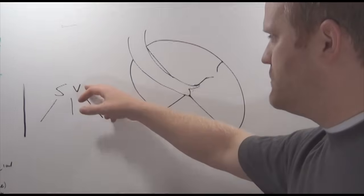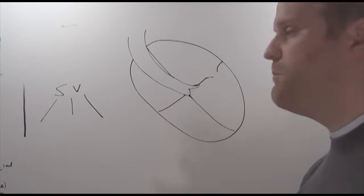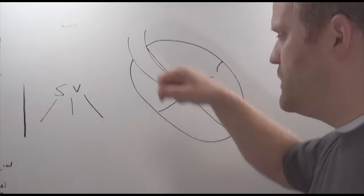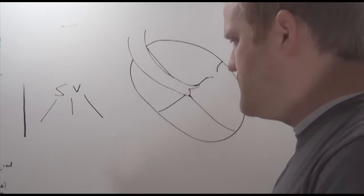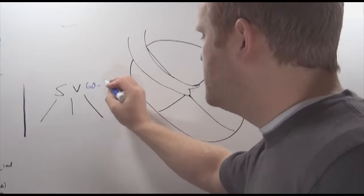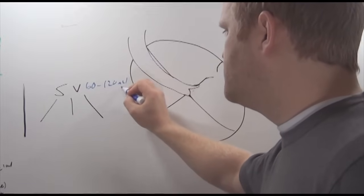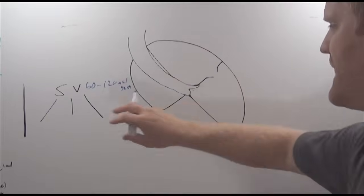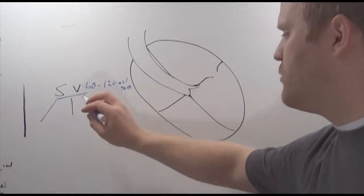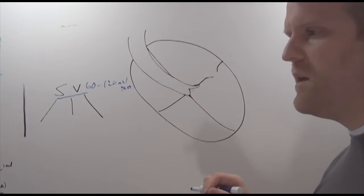So first of all, we have what is stroke volume. Stroke volume is the volume of blood pumped out of the heart with each beat. Normally, stroke volume is going to be 60 to about 120 mils per beat. So that is our parameter that we're looking at, how much blood is going out of the heart with each beat.